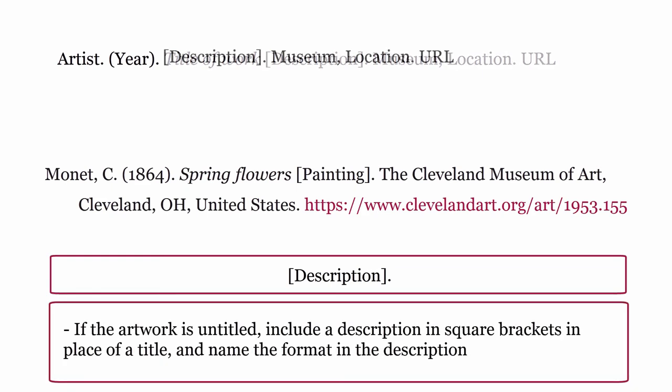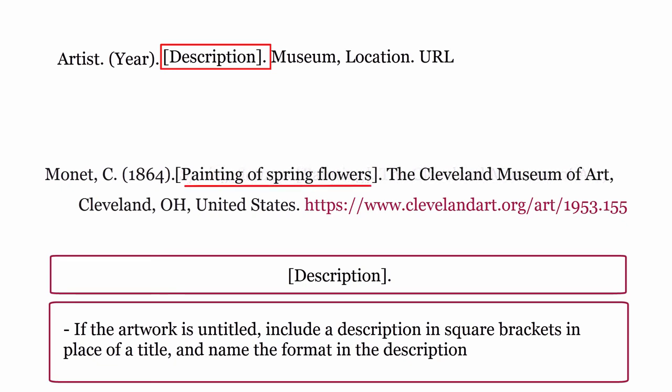If the image is untitled, include a description in square brackets in place of a title and specify the medium in the description. For example, if this image did not have a title, the description might look like this: [Painting of spring flowers].